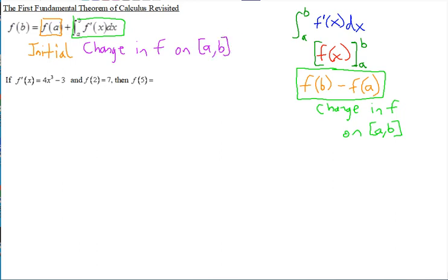The way you can recognize these types of problems — because they come in all different contexts — is when you have one point on a function, you're looking for another one, and you also have the derivative of that function. So notice here we have the derivative f' of x, we have one point on the function, f of 2 equals 7, and we're looking for another one, f of 5.